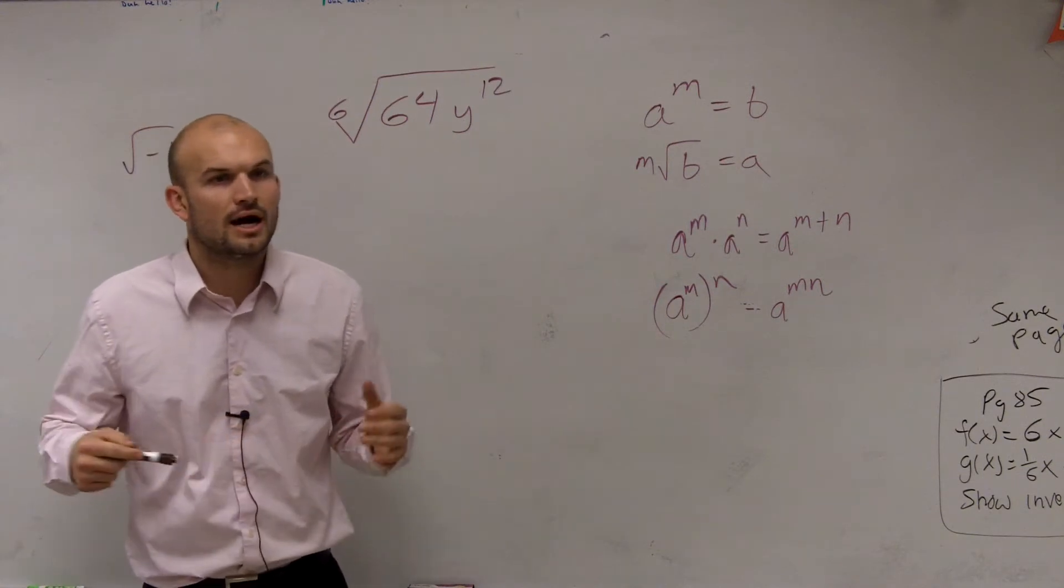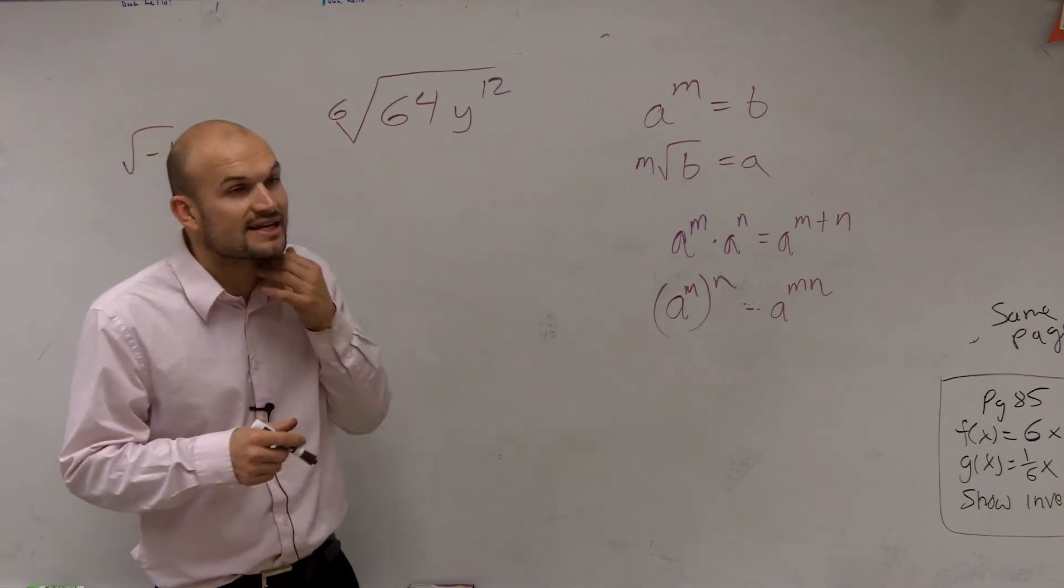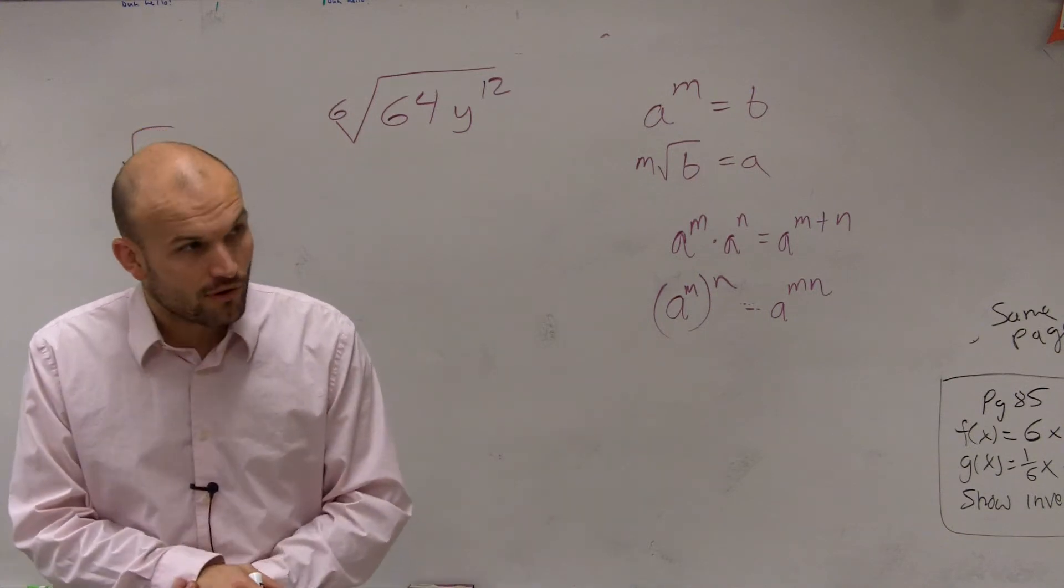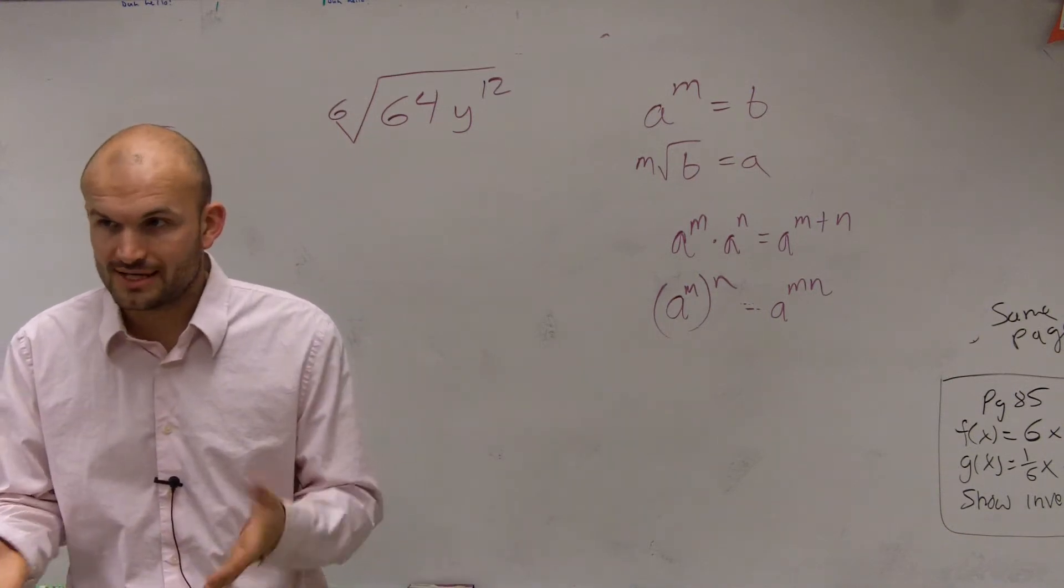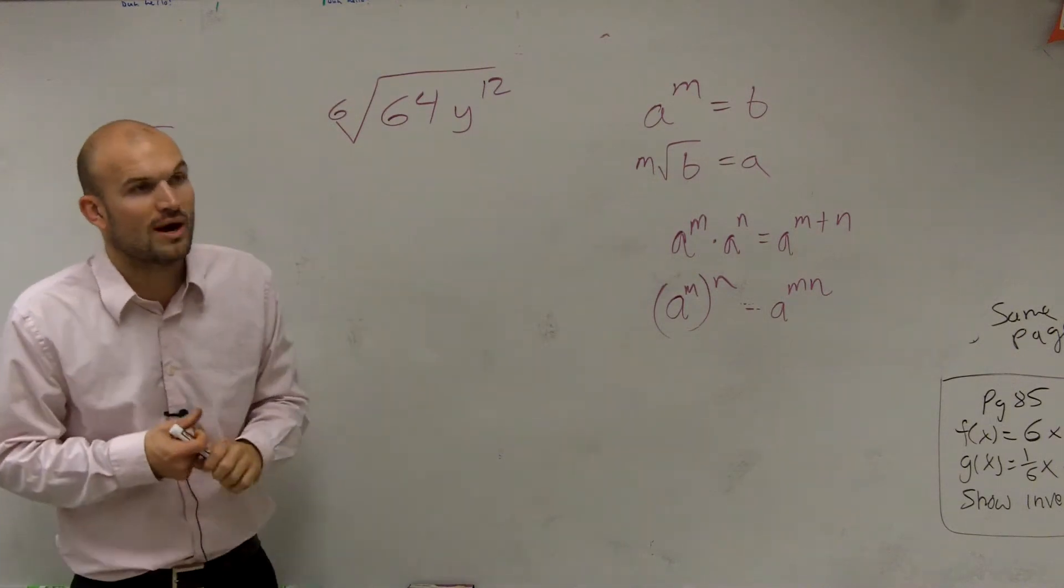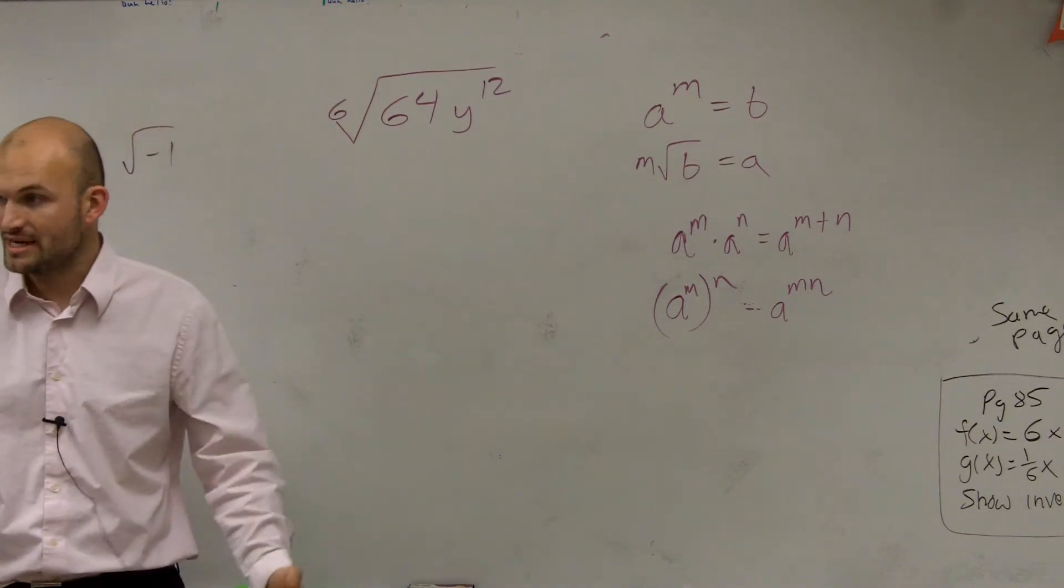So here we go. Now we have the 6th root of 64y to the 12th. So now, just like we did before, what we need to look at is rewriting our radicand 64y to the 12th as products raised to the 12th power.